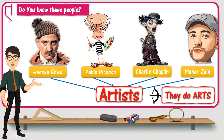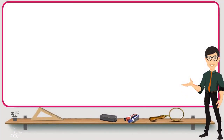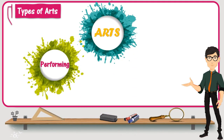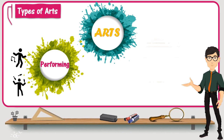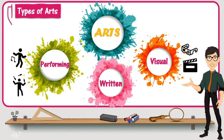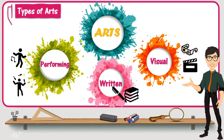Let's get this clear then. In general, there are many different forms of arts. There are performing arts, in which artists usually use their body or voice to express themselves. There are also visual arts, in which artists create something you can see, such as paintings, drawings, films, photos, etc. And there are also written arts, in which artists can create something through writing.